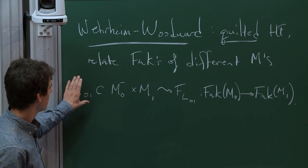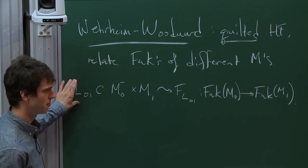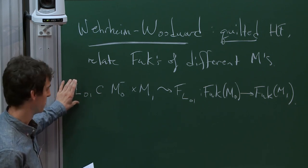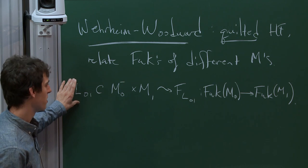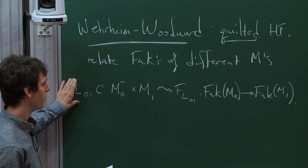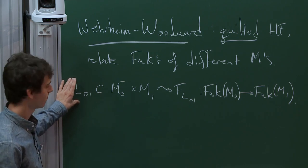The motivation for why the right notion of morphism from M0 to M1 should be a Lagrangian like this is Weinstein's symplectic creed: everything is Lagrangian, and therefore morphisms between symplectic manifolds should be Lagrangians. You can think of the graph of a symplectic morphism from M0 to M1 as a key example.